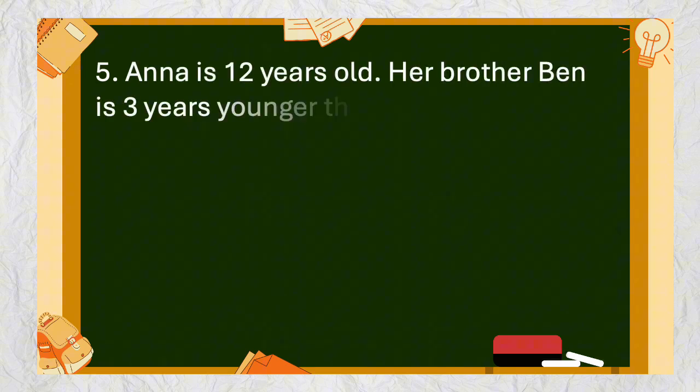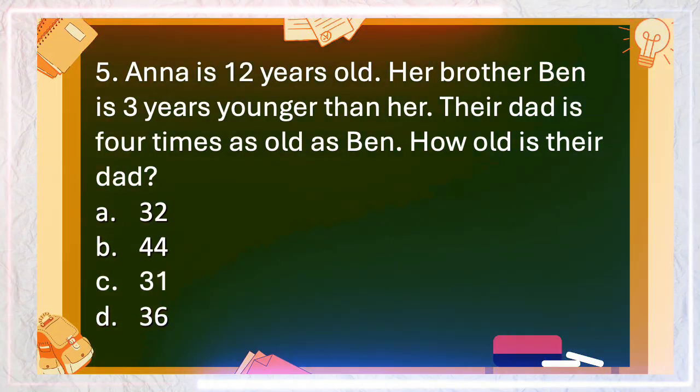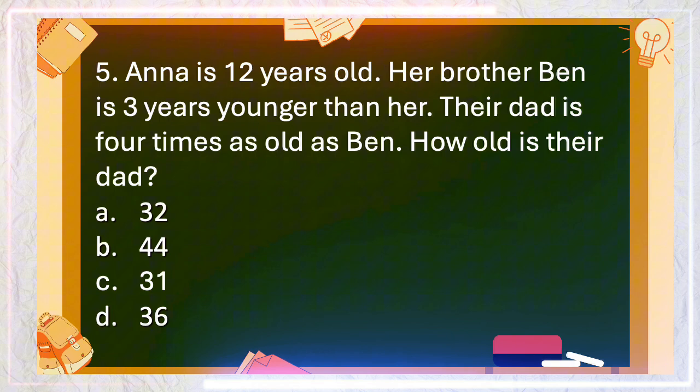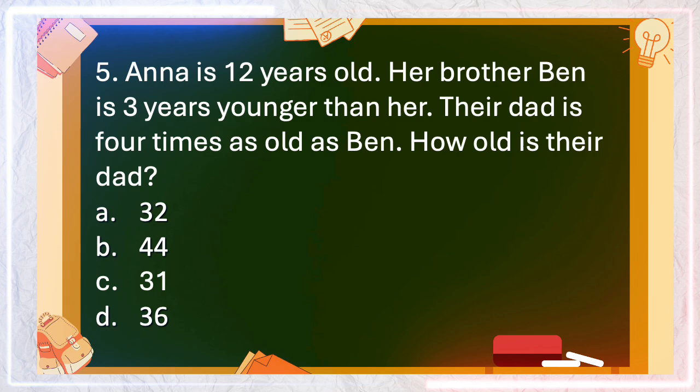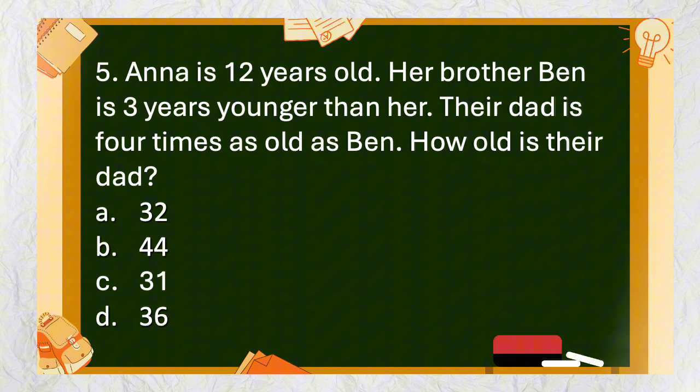Number 5: Anna is 12 years old. Her brother Ben is 3 years younger than her. Their dad is 4 times as old as Ben. How old is their dad? A. 32, B. 44, C. 31, D. 36. The answer is D. 36.